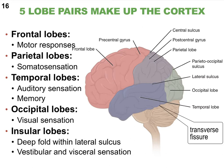Each one of these lobes has some major functions associated with it. Many of the motor responses — meaning commands in the form of action potentials that leave the central nervous system and go to our muscles — originate from the frontal lobes. Think about a baby developing motor skills, getting better at walking, grabbing, and holding on to things.